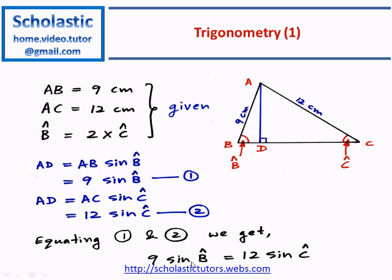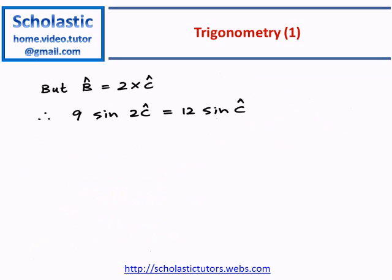Now we substitute the given condition where angle B is equal to twice the angle C. So instead of B we substitute 2C. 9 sine B will become 9 sine 2C is equal to 12 sine C.